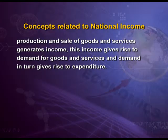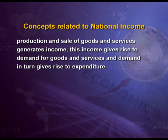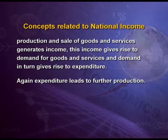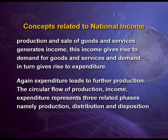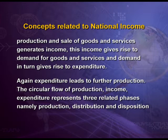As we discussed earlier, production and sale of goods and services generates income. This income gives rise to demand for goods and services, and demand in turn gives rise to expenditure. Again, expenditure leads to further production. The circular flow of production, income, and expenditure represents three related phases, namely production, distribution and disposition.